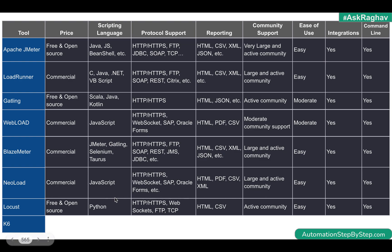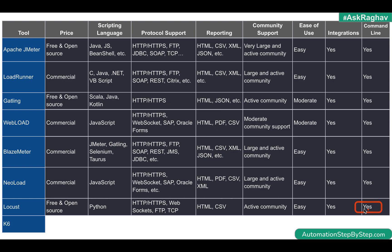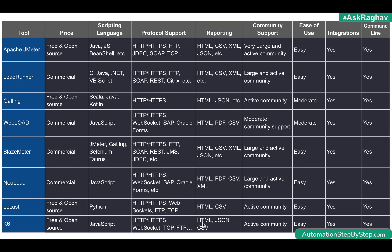Locust is a free and open source tool whose native language is Python, making it a great option if you prefer Python for scripting. It supports a wide range of protocols including HTTP, HTTPS, WebSockets, FTP, and TCP. Reporting options include HTML and CSV, with other options available. It has an active community, is easy to use with a UI available, supports command line runs, and supports integrations.